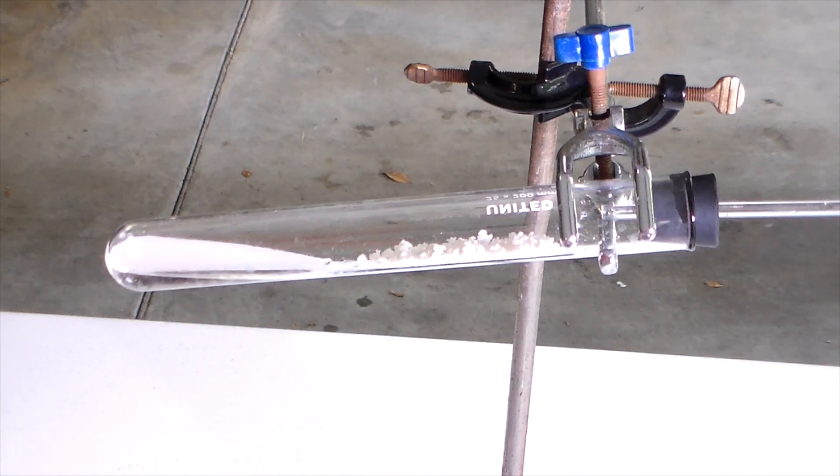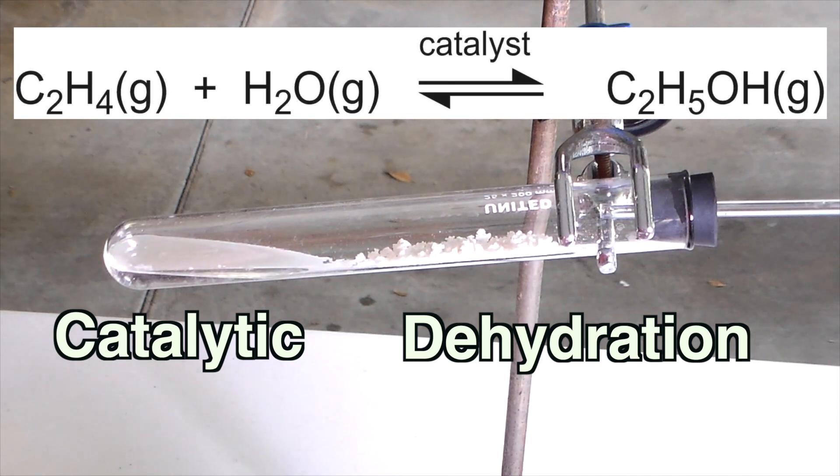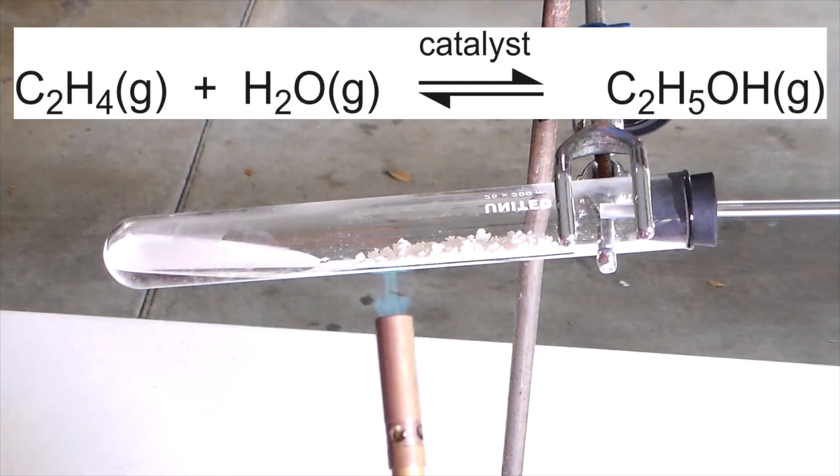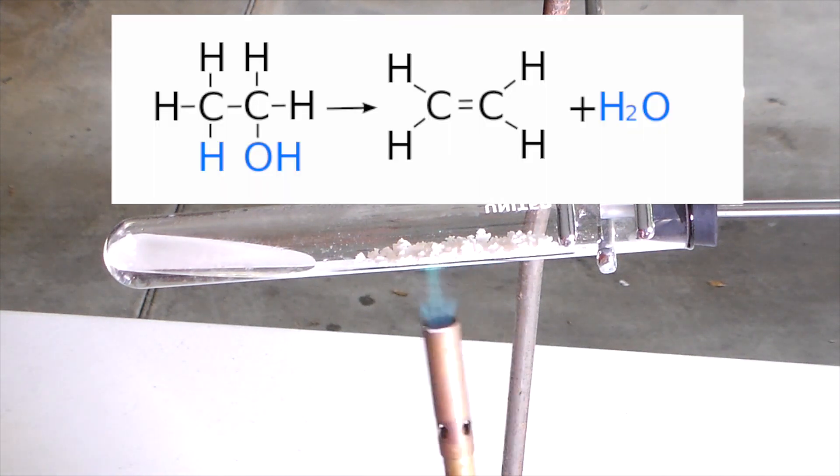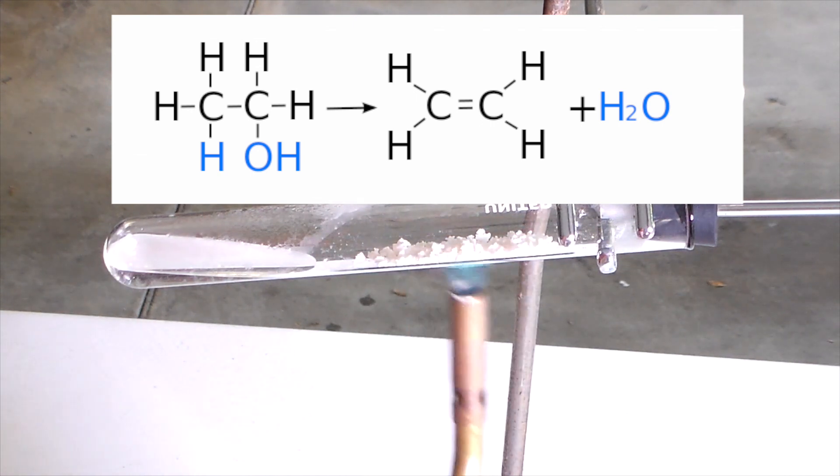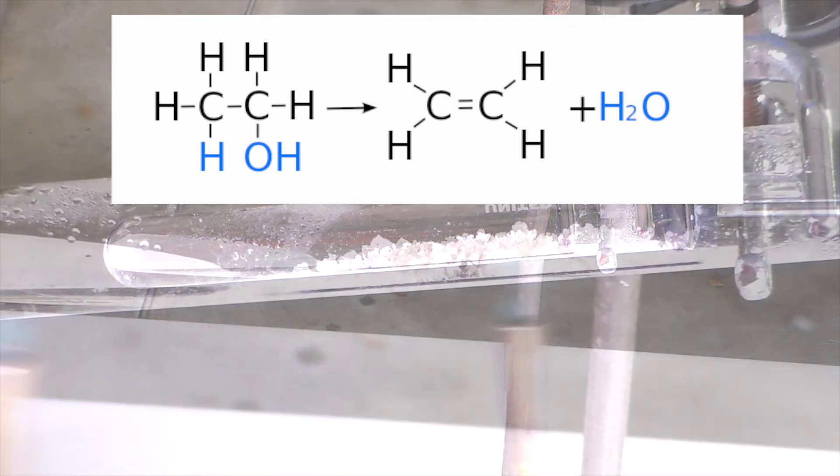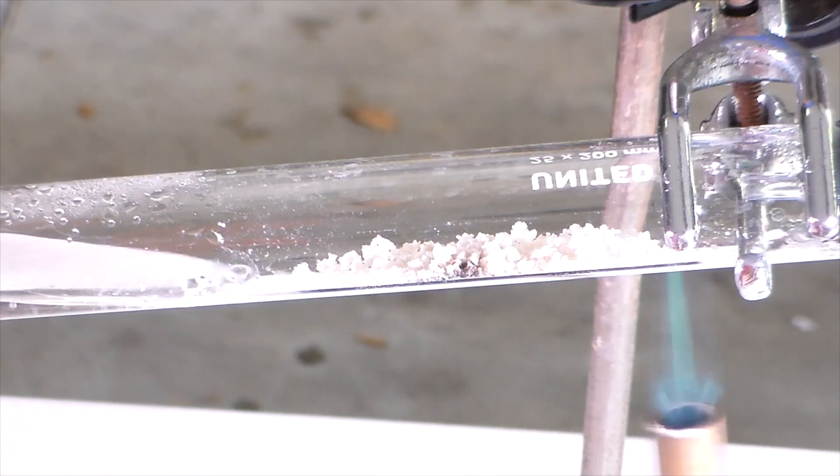The reaction we will carry out to produce ethene is known as a catalytic dehydration. The word catalytic indicates that we will be using a catalyst to facilitate this reaction. In this case, the catalyst is the aluminum oxide that we prepared in a previous video. The word dehydration indicates that we are removing a water molecule from the ethanol. In the equation on the screen, you can actually see where all of the atoms in the water come from. The OH of the water comes from the OH on the ethanol and the other hydrogen atom comes from one of the hydrogens on the other end of the ethanol molecule. Together, these form H2O and the two carbon atoms join together in a double bond. Anyway, that's enough with the theory, so let's get on to the actual reaction.